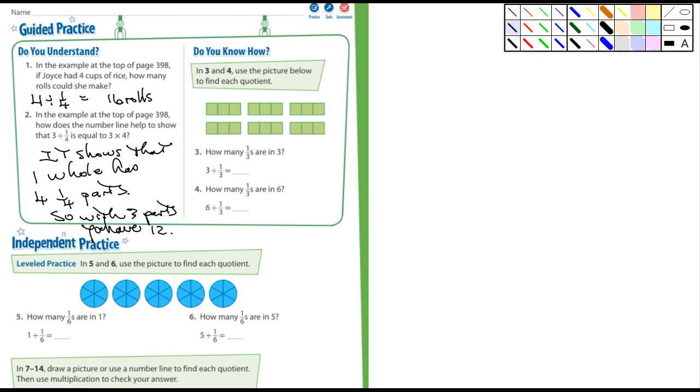Okay, there we go. In three and four, use the picture below to find each quotient. Remember quotient is the answer to a division problem. How many one-thirds are there in three? How many do you see here? One, two, three, four, five, six, seven, eight, nine. And you know that three times three is nine. How many one-thirds are there in six? Well, what's six times three? That's going to be eighteen. And if we counted all those out it would be eighteen.